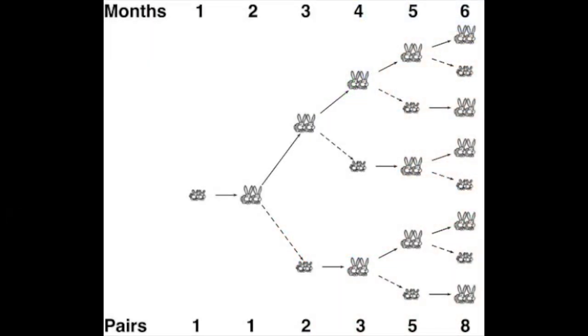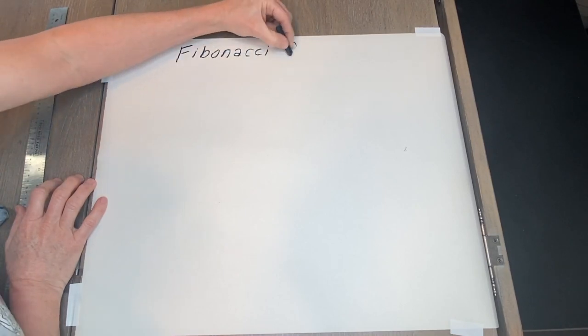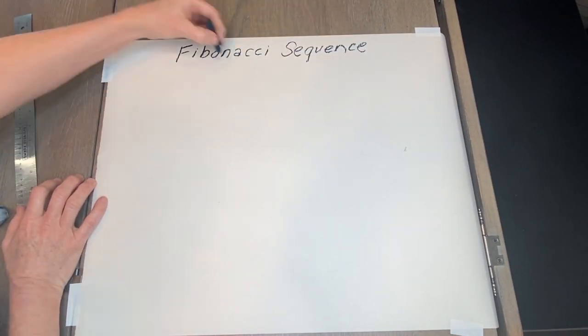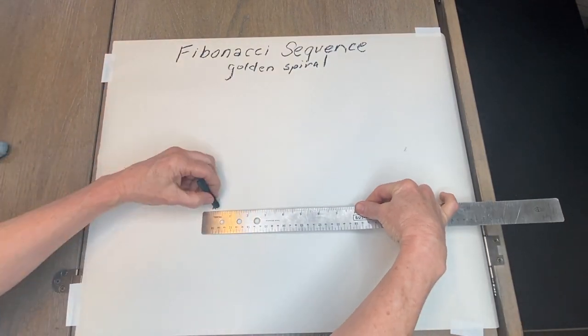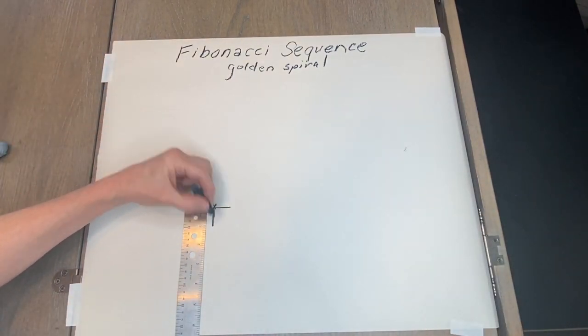And many believe that it came from the numerical sequences that are found in the breeding of rabbits. But regardless of who discovered it, it is an inherent principle in all of nature. So let's do a little example to further describe what these numbers are and how you can calculate them.